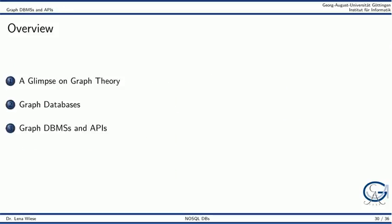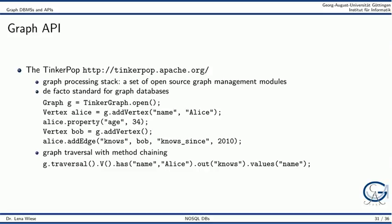As a last topic for this session, we will look at some graph databases and APIs. The TinkerPop graph processing stack is a de facto standard for graph databases and graph processing nowadays. In the example, you can see how to construct a new graph in Java and add vertices and edges to it. To represent a graph traversal, method chaining is used so that you can concatenate several method calls. In the example, all nodes with the name property set to Alice are looked up, then all edges labeled 'knows' are followed, and from the target nodes, all values of the name property are returned — printing out all names of Alice's friends.